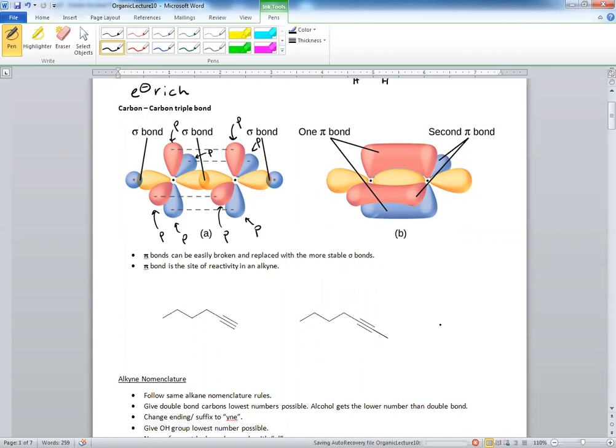So you can see now you can have reaction go not only once but twice because it can go from a triple bond to a double bond, and then from a double bond to a single bond.